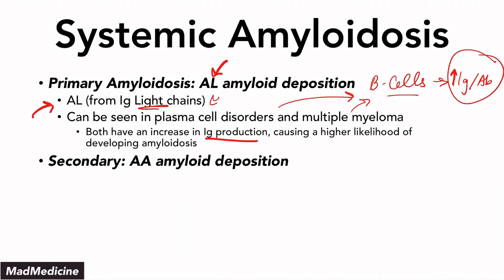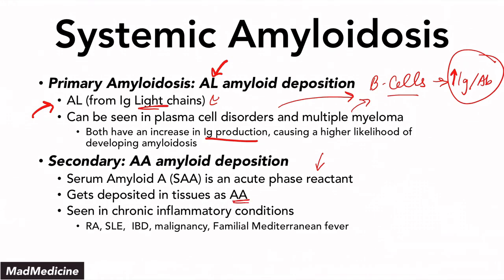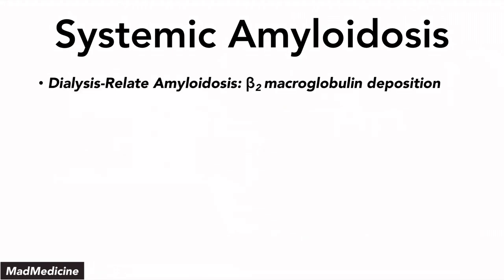Secondary amyloidosis is AA amyloid deposition. This occurs from serum amyloid A, an acute phase reactant that gets deposited in tissue as AA amyloid. You can see this in many chronic inflammatory conditions like rheumatoid arthritis, lupus, irritable bowel disease, malignancies, and familial Mediterranean fever. Because you have ongoing inflammation, this causes an increase in acute phase reactants, which increases the likelihood of AA deposition occurring.